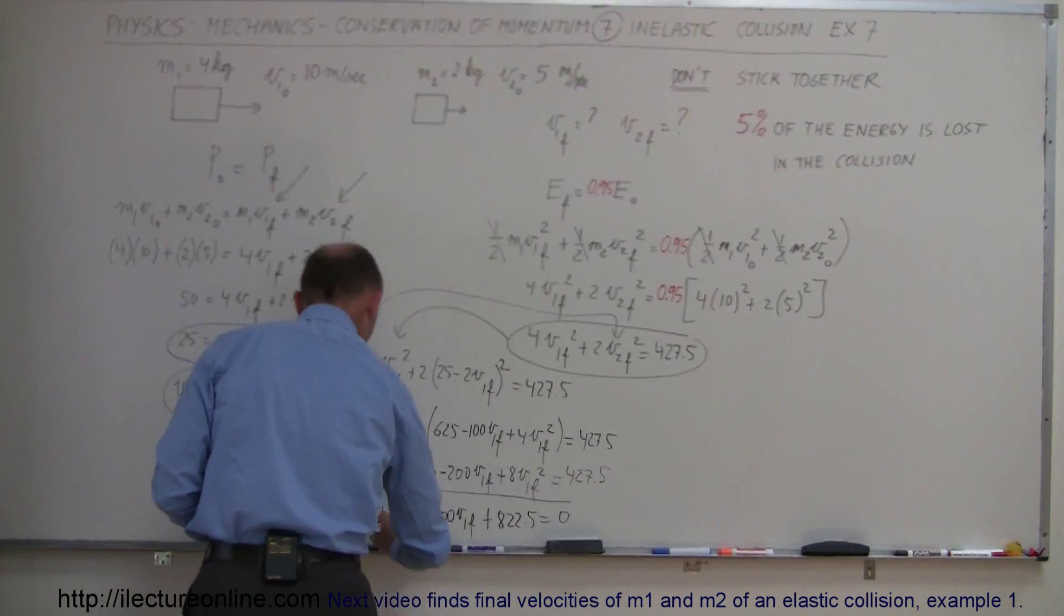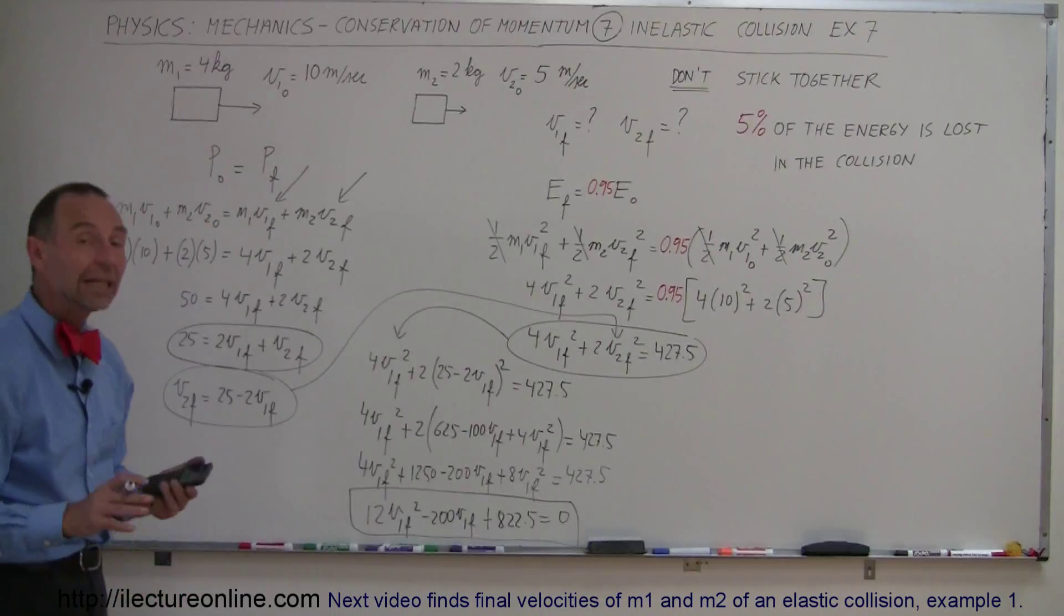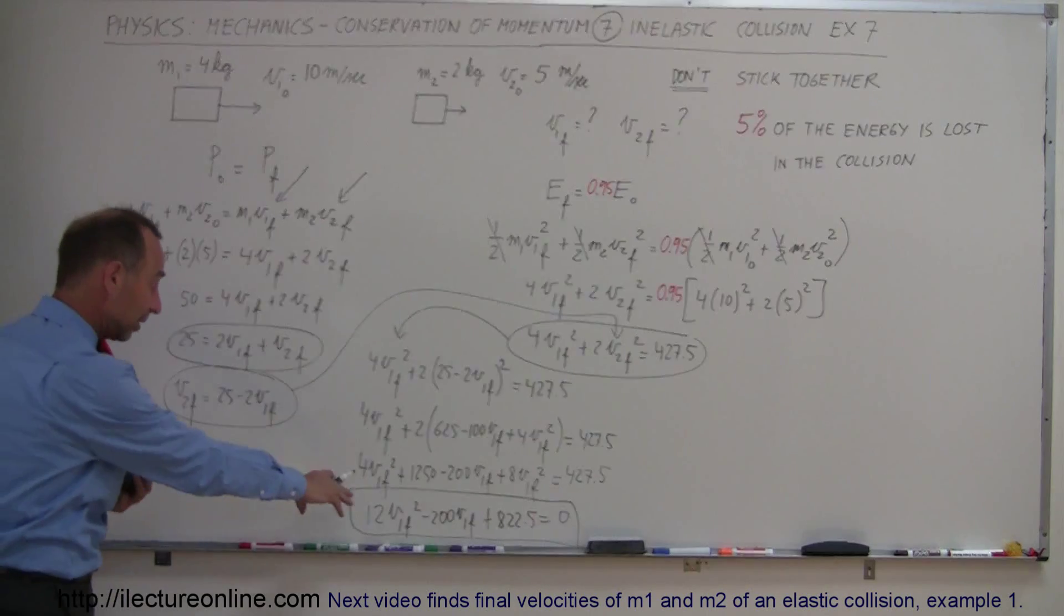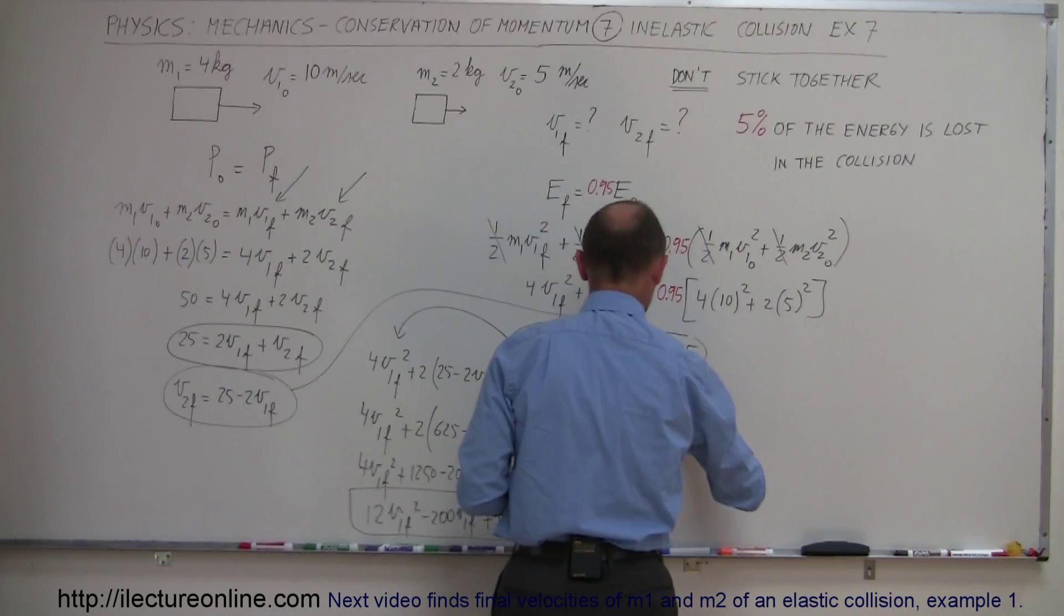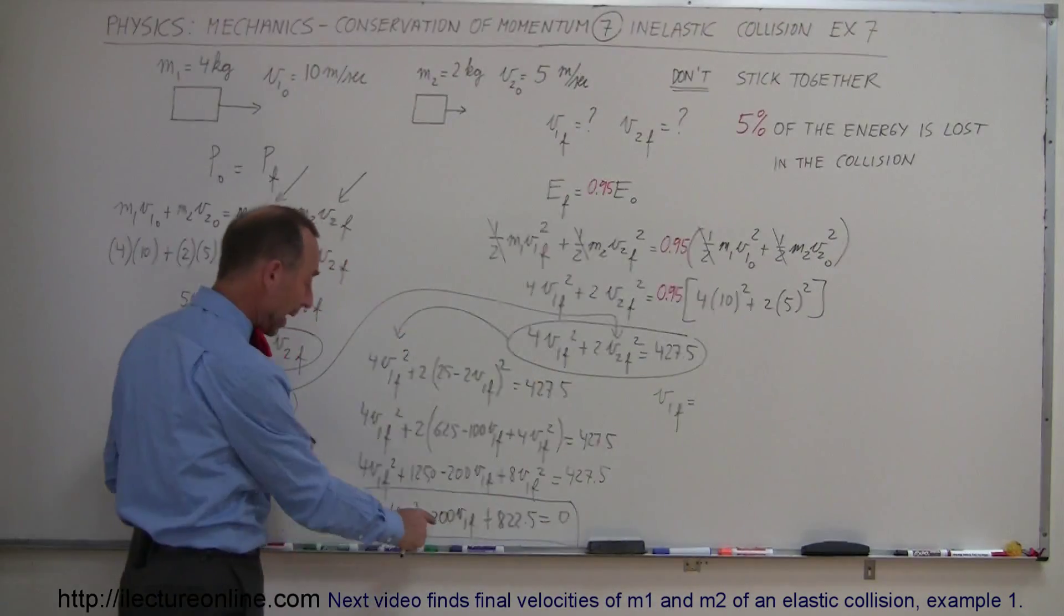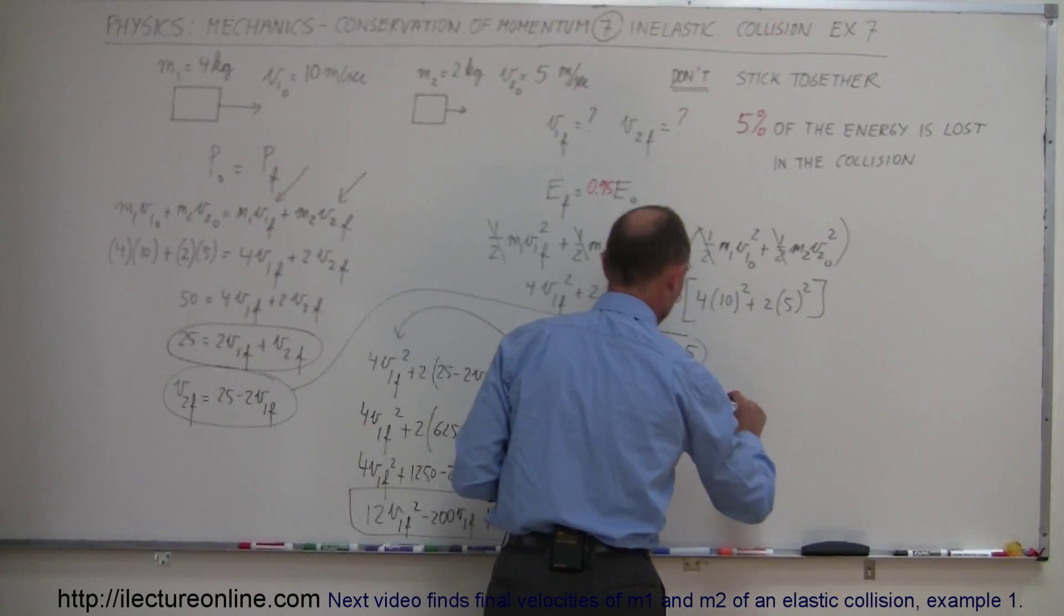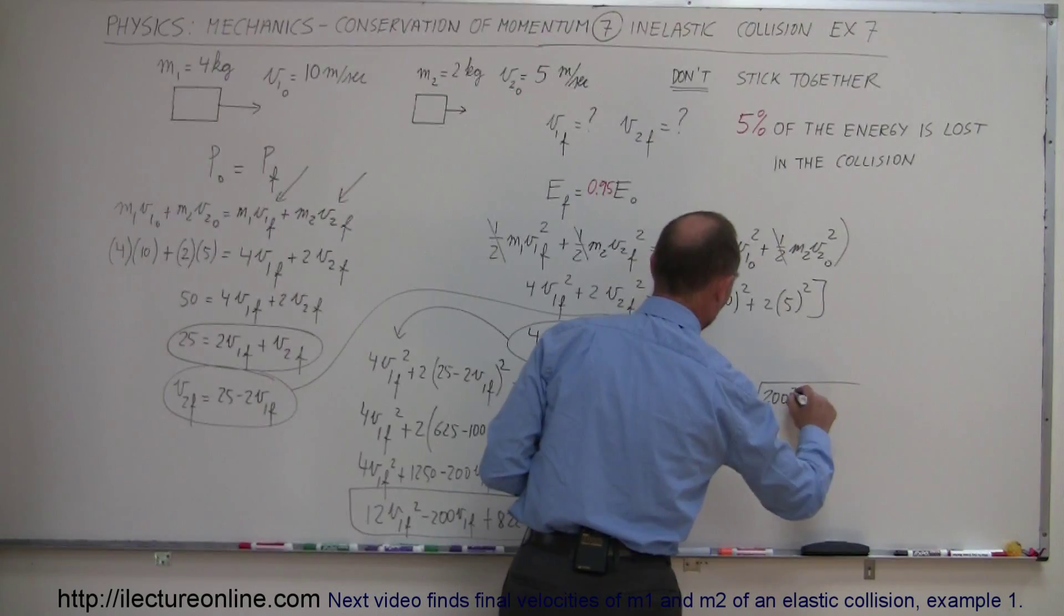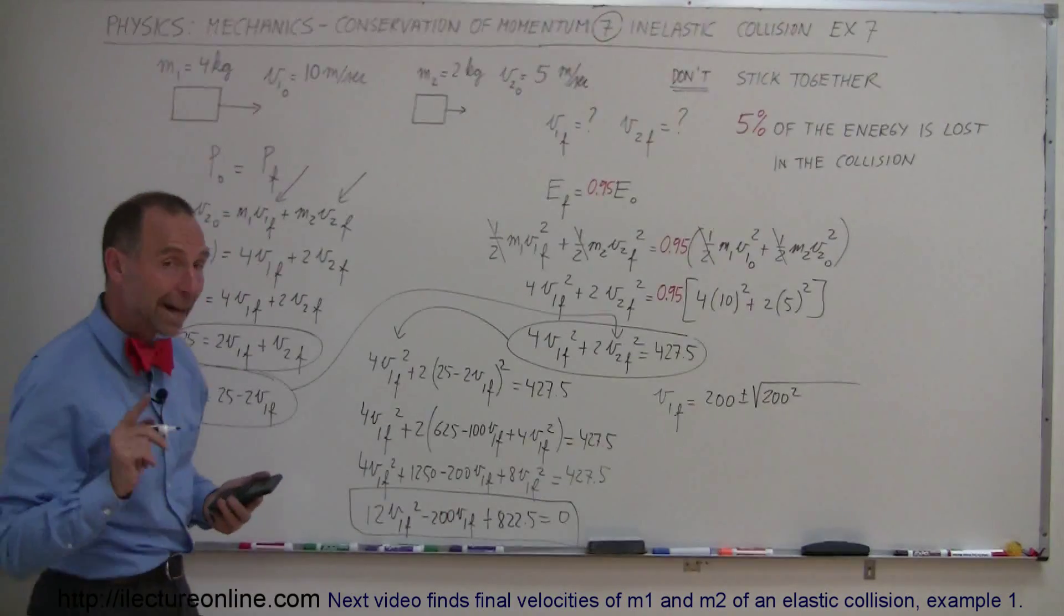So now we have a quadratic equation which if we can solve that will lead us to the two values for V1 final and V2 final. So first we solve for V1 final by solving this equation using the quadratic formula. So we have V1 final is equal to, remember the quadratic formula, it's minus B. B is this term right here so that would be a plus 200 plus and minus the square root of B squared which is 200 squared, we don't have to worry about the negative sign since we're squaring it anyway, minus